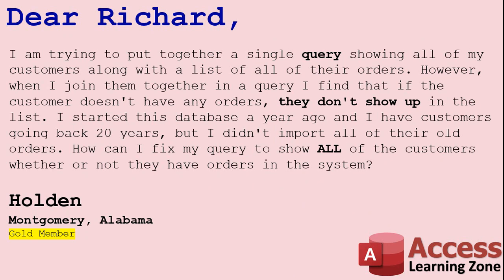Today's question comes from Holden from Montgomery, Alabama, one of my gold members. Holden says: I'm trying to put together a single query showing all of my customers along with a list of all of their orders. However, when I join them together in a query, I find that if the customer doesn't have any orders they don't show up in the list. I started this database a year ago and I have customers going back 20 years, but I didn't import all of their old orders. How can I fix my query to show all of the customers whether or not they have orders in the system?